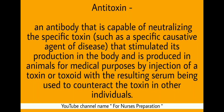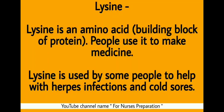What is antitoxin? Antitoxin is an antibody capable of neutralizing the specific toxin that stimulated its production in the body, and is produced in animals for medical purposes by injection of a toxin or toxoid, with the resulting serum being used to counteract the toxin in other individuals. About Lysins: Lysine is an amino acid. People use lysine to make medicines, and it is used to help with herpes infection and cold sores.